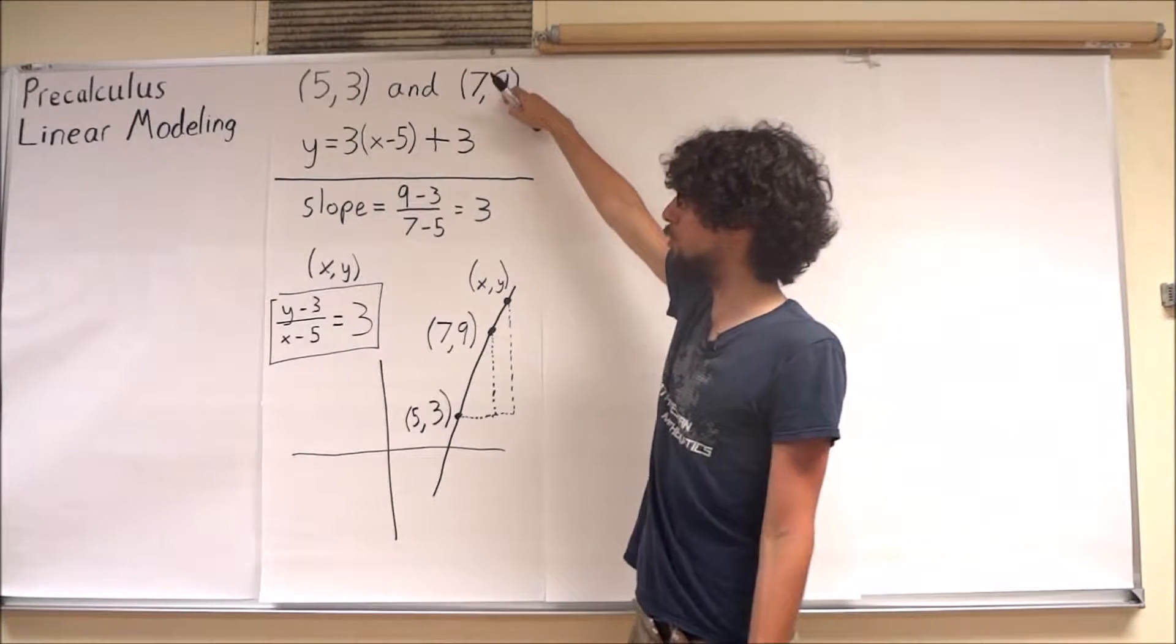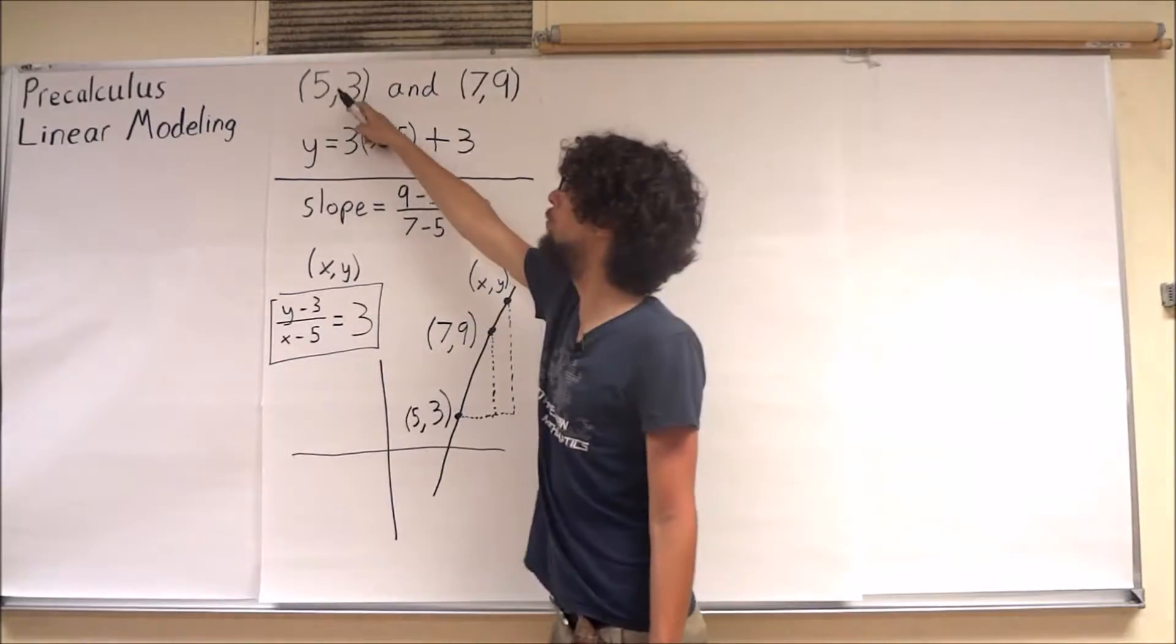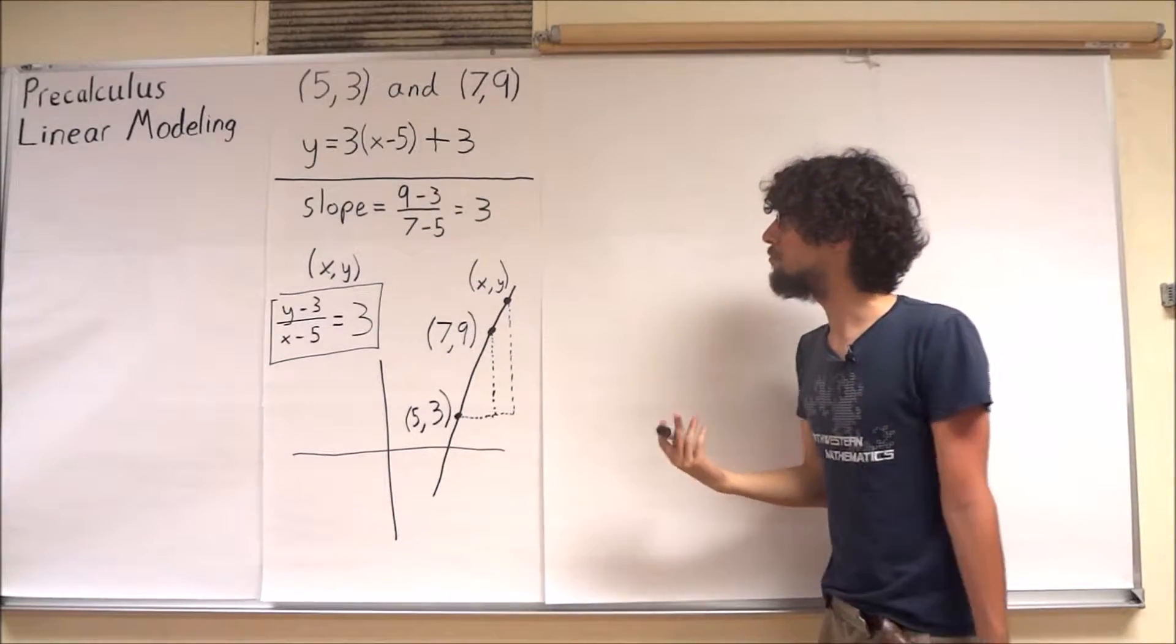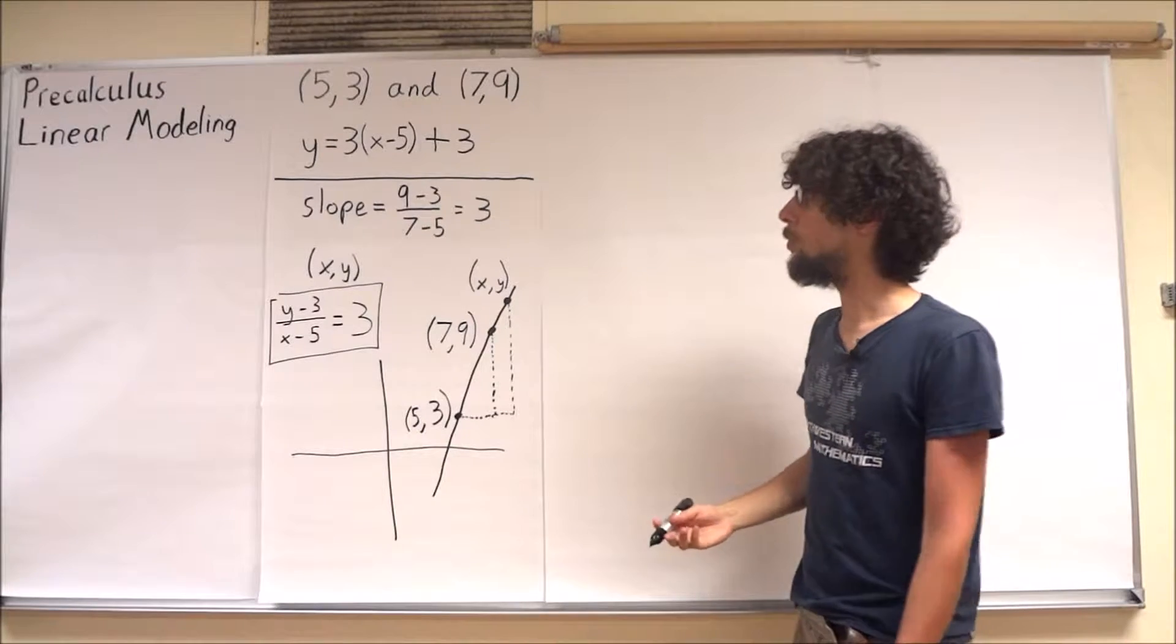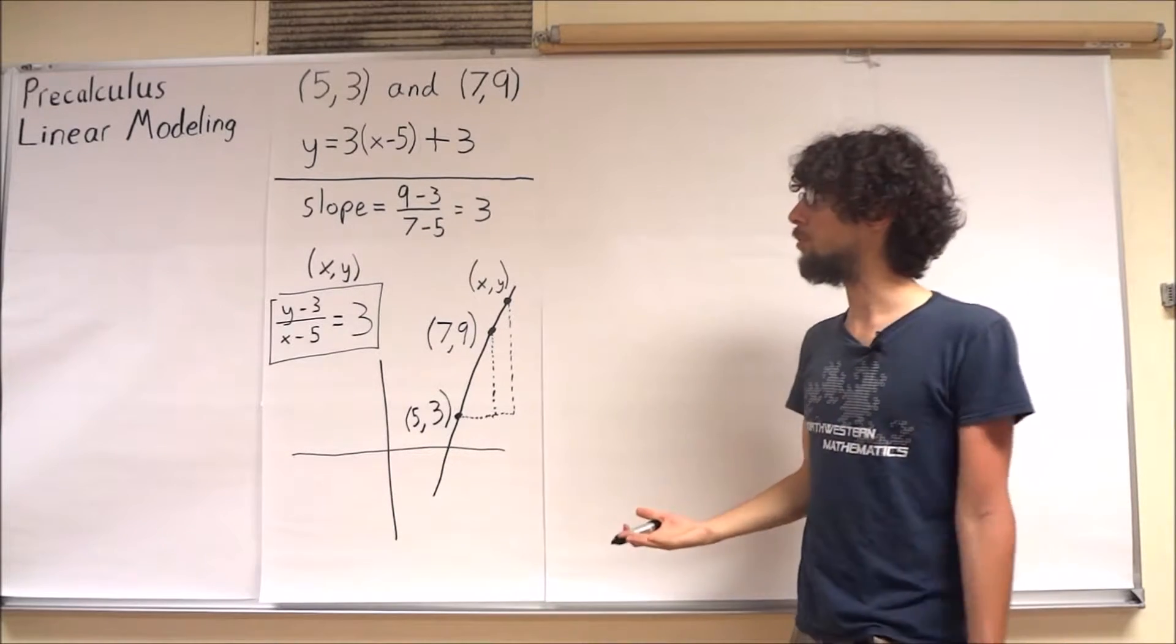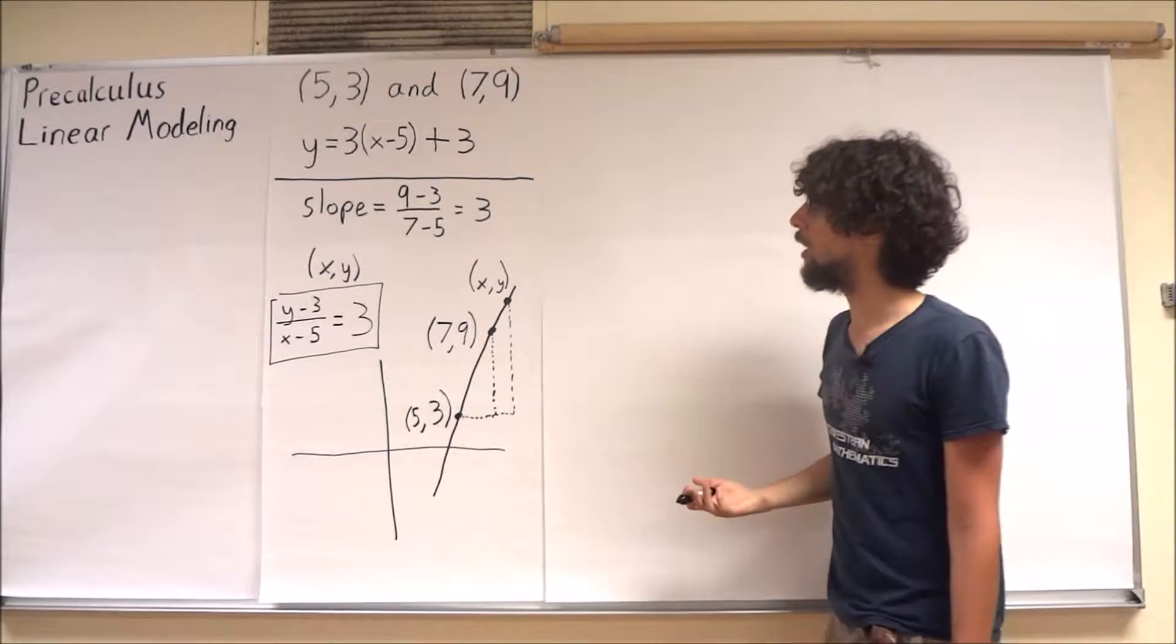So now that we've seen how to do this when we have two points, let's just for good measure see how to do this when we have one point and the slope. Really the ideas work out quite similarly.